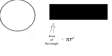So now base times height becomes pi r times r. Combine the r's together and we have pi r squared, which is equal to the area of the rectangle, which is equal to the area of the circle.